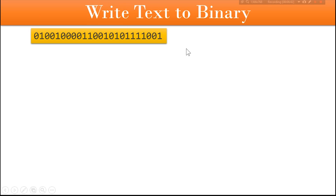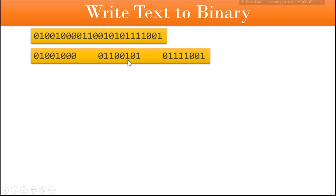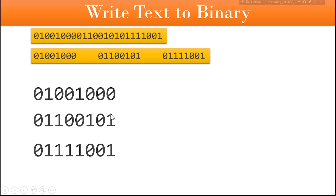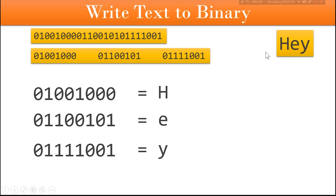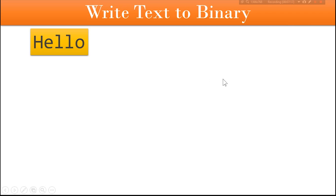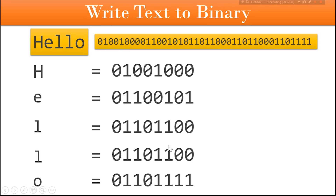Now suppose someone gives you a long binary number and asks you to convert it into a word. Since it is longer than 8 characters, split it into pieces of 8 characters each, write each piece on a different line, and convert each one to a character using the method taught. Write all the characters together on one line to get the text — for example, that gives you 'hey'. Going the other way, if someone gives you the word 'hello' and you want binary, write each letter on a different line, convert each character to binary by dividing by 2, then join them all together in a single line — that is how you write 'hello' in binary.